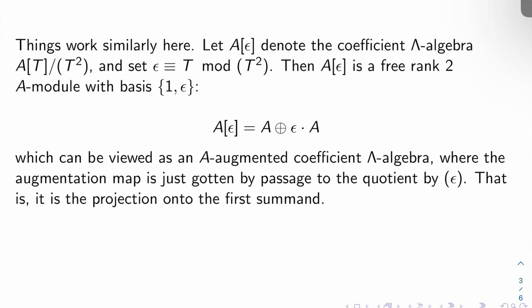We find that A[ε] is A ⊕ ε·A. And this can be viewed as an A-augmented coefficient Λ-algebra, so it's actually in our category. What's the augmentation map? Well, you just project onto the first coordinate, right? Or in other words, you pass to the quotient by the ideal generated by ε.